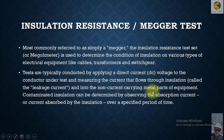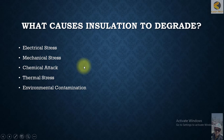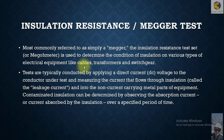The leakage current flows into the non-current-carrying metallic parts of the equipment. Contaminated insulation can be determined by observing the absorption current — the current absorbed by the insulation over a period of time. This covers the basic definition of mega or insulation testing. In the next segment, we will discuss the causes of why insulation degrades or becomes damaged. Thank you very much.